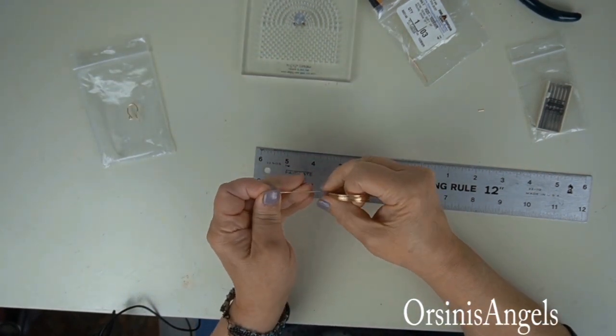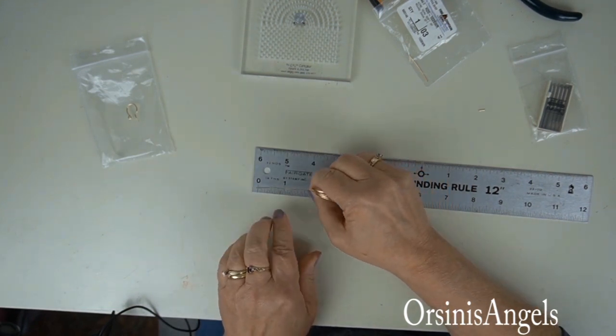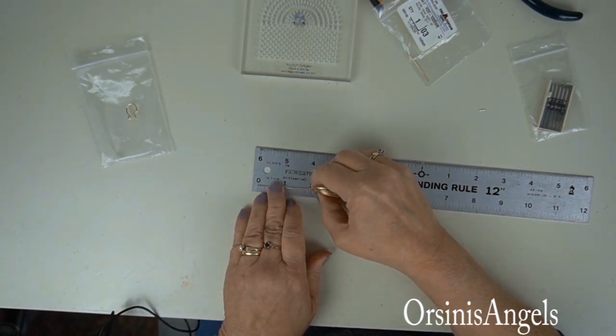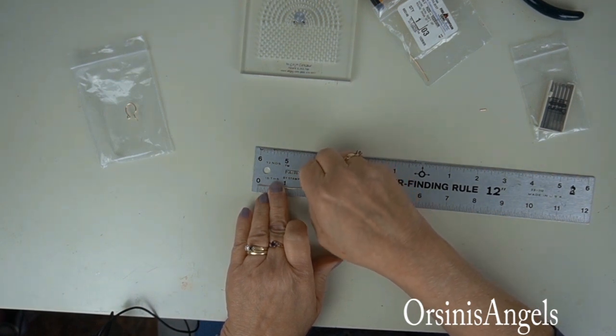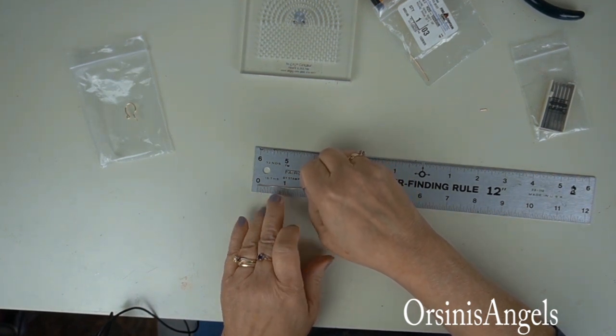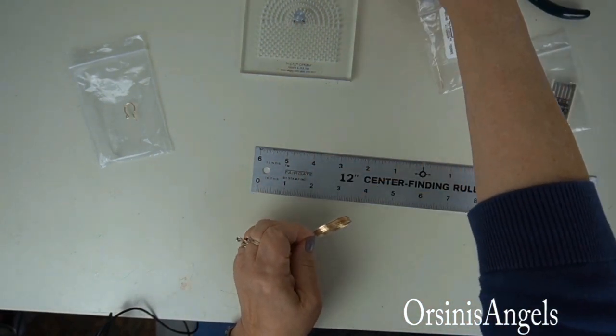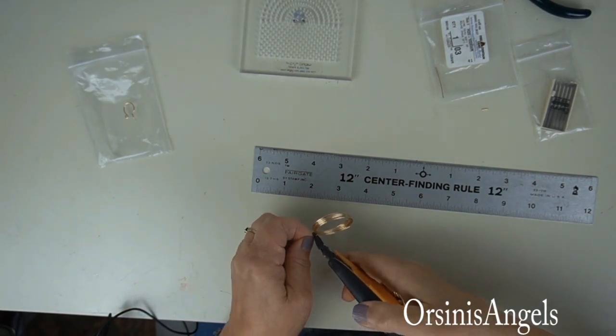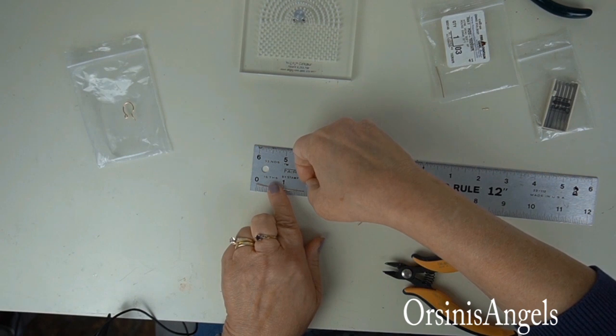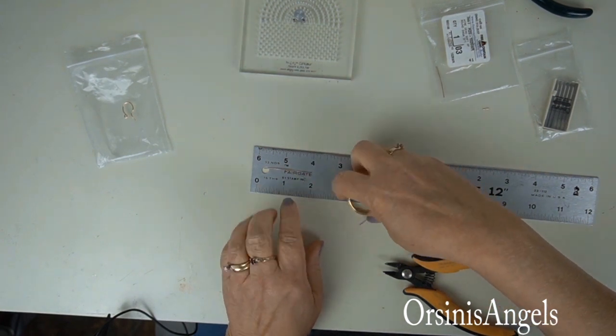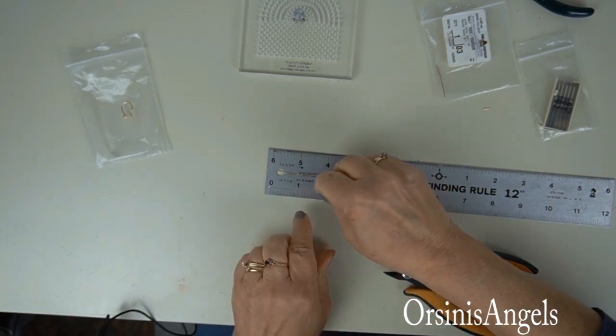Part of what's good about making a practice piece is you can actually measure out exactly the amount of wire that you need. For this earring wire I needed one and three quarters, so I'm just measuring that and then I'm going to cut another piece for the second earring.